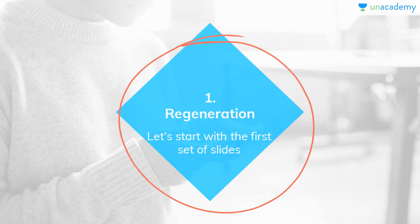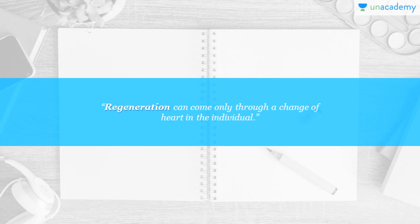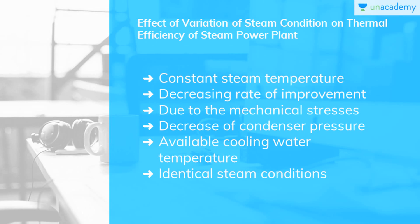Let's move on with our lesson on regeneration. The effect of variation of steam condition on thermal efficiency of a steam power plant: the variation of Rankine efficiency with inlet steam pressure at a constant temperature of 470 degrees centigrade happens at 3 condenser pressures. It is seen that for inlet steam pressure above 100 bar, there is a continuing but decreasing rate of improvement of cycle efficiency.